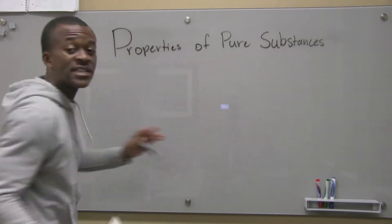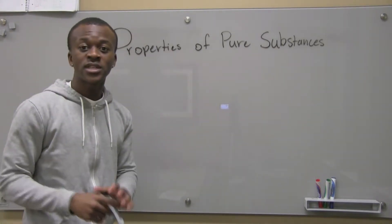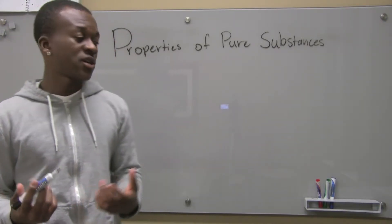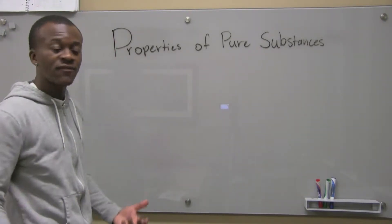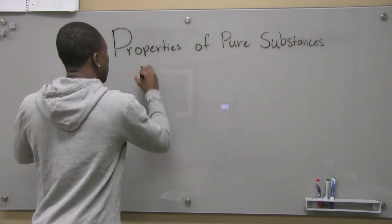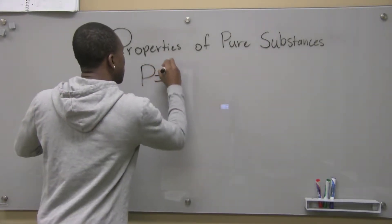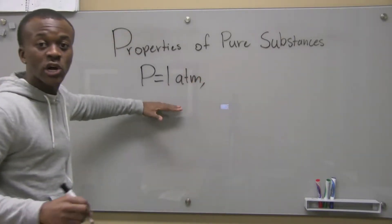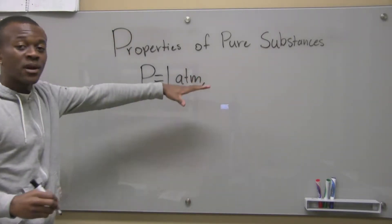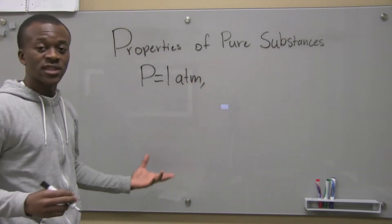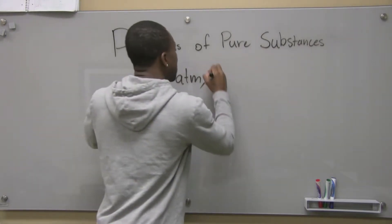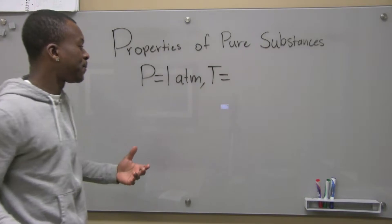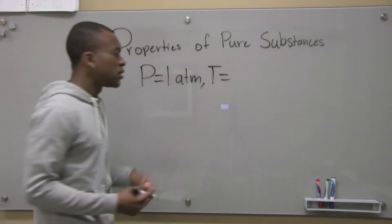To give us more of an idea of compressed liquids, saturated liquid-gas mixtures, and superheated vapors, I'm going to take the example of water at one atmosphere. I'm going to keep the pressure constant but vary the temperature. Atmospheres is a unit of pressure.